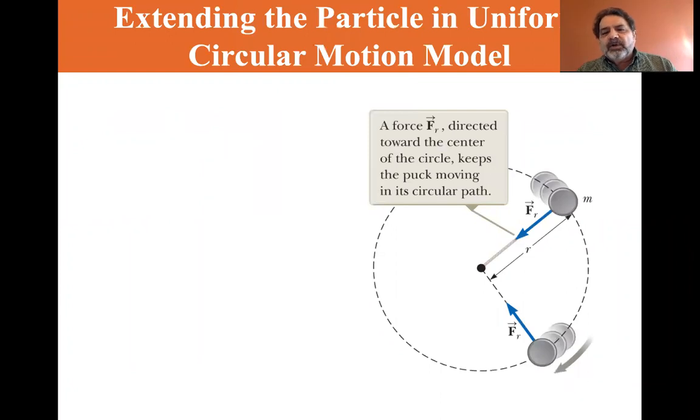So we're spinning a puck. The tension in the string is what supplies the force that keeps it moving in a circular path. We've already learned that the centripetal acceleration is v squared over r.